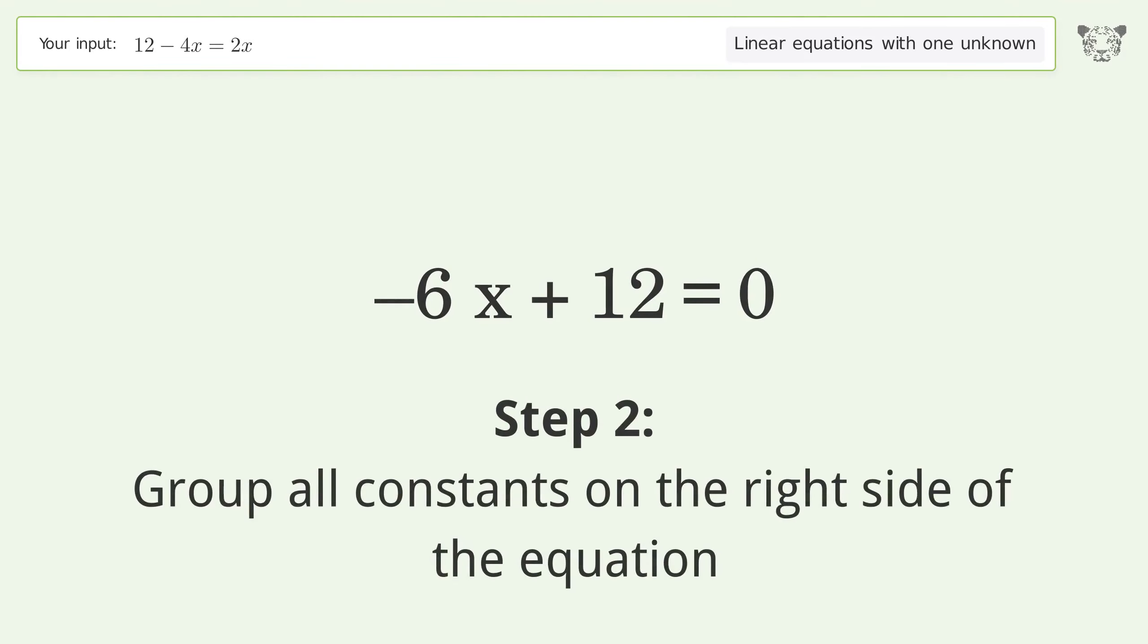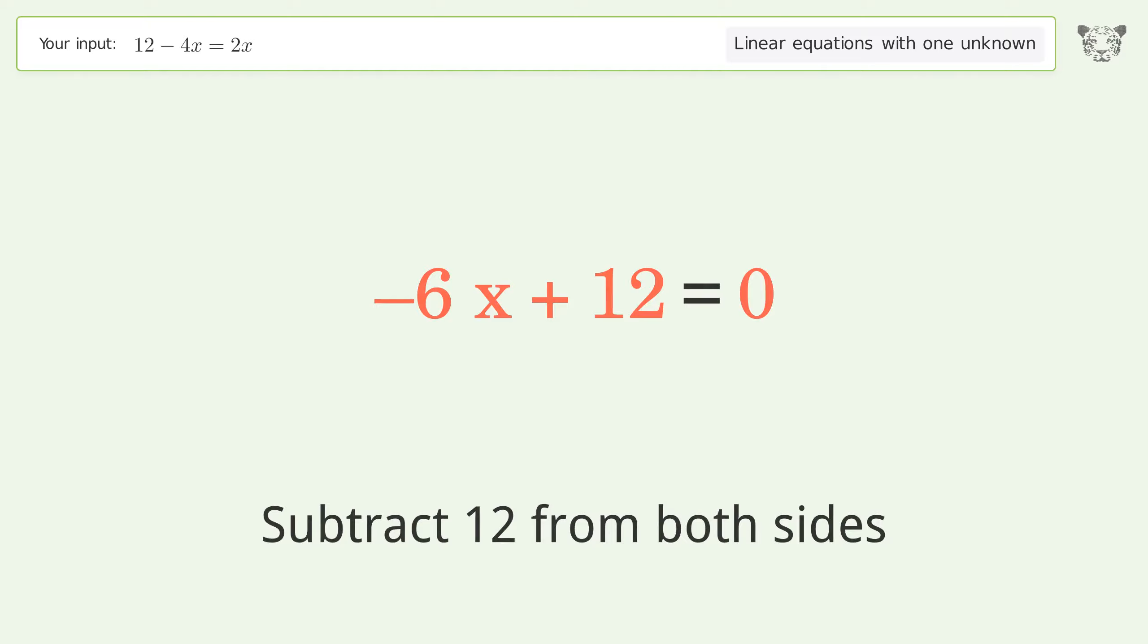Group all constants on the right side of the equation. Subtract 12 from both sides.